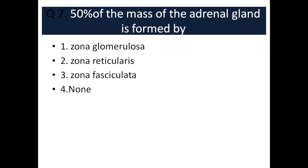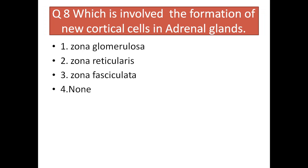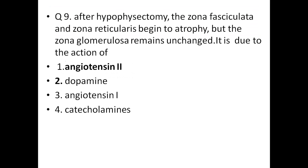Question number seven: 50 percent of the mass of the adrenal gland is formed by — zona glomerulosa, zona reticularis, zona fasciculata, or none of the above. Question number eight: which zone is involved in the formation of new cortical cells in adrenal glands — zona glomerulosa, zona reticularis, zona fasciculata, or none of the above?